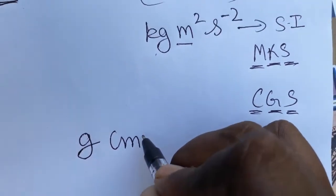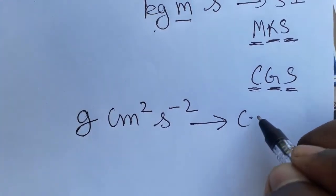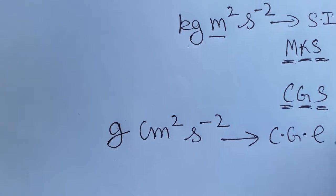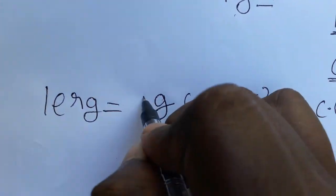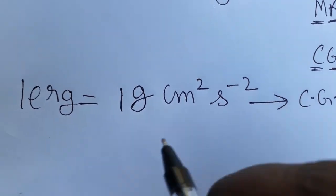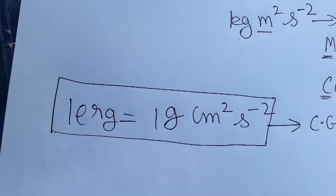Centimeter squared and second minus two - this is the CGS system. So one erg we can call it one gram centimeter squared second inverse (g·cm²·s^-2). This together we can call one erg. Thank you.